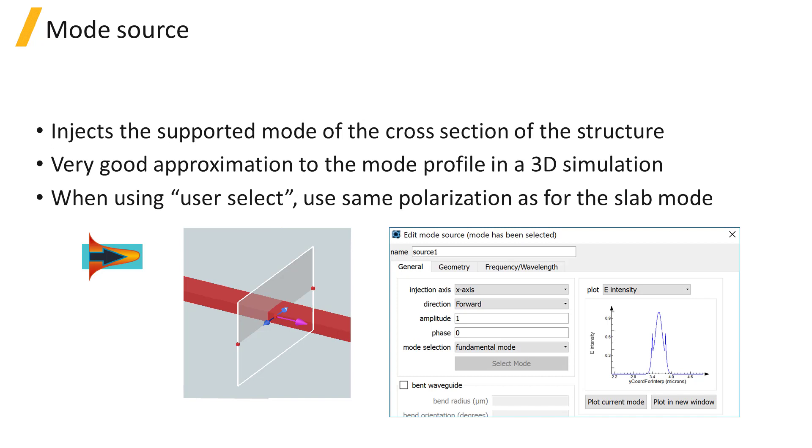You can edit the mode source and select the mode to inject from the general tab the same way as done in FDTD solutions. One tip is to ensure that if you use the user select mode selection option, the selected mode should have the same polarization as the slab mode, otherwise the mode will not get injected properly.